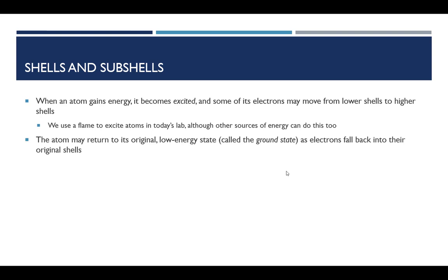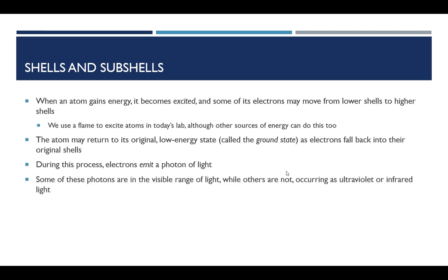But to do that, the atom can't just destroy energy. There's what's called a conservation of energy law, so it has to somehow dispense with that energy, and it does that by emitting a photon of light. And these photons, some of them are visible lights of different color, and other photons occur in the ultraviolet range or infrared range, which we cannot see with our eyes, but we can detect with specialty equipment.